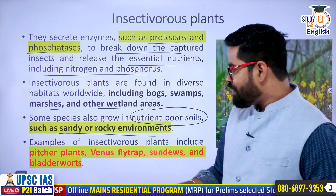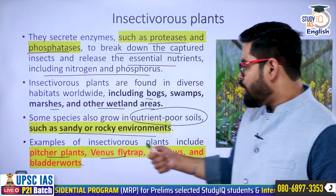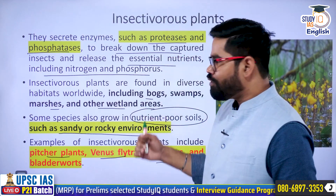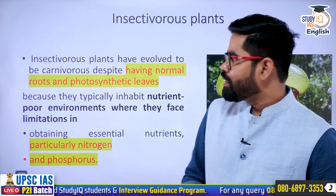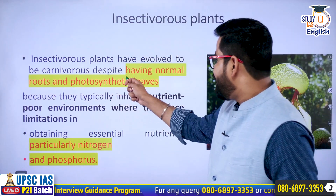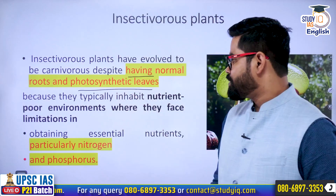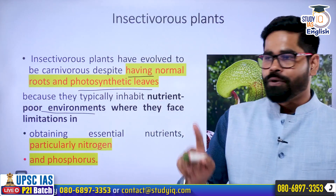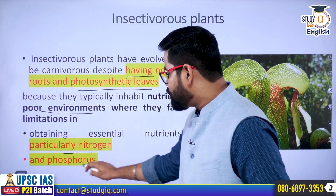What are the examples? We have pitcher plants, Venus flytrap, sundews, and bladderworts — these are the different examples of carnivorous or insectivorous organisms around us. They have normal roots and also photosynthetic leaves because they are inhabiting poor environments, but due to the lack of nitrogen and phosphorus, they do the trapping of insects.